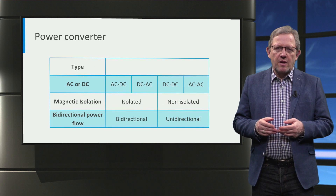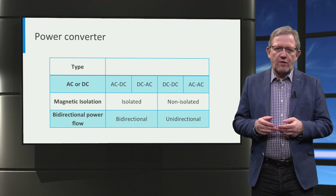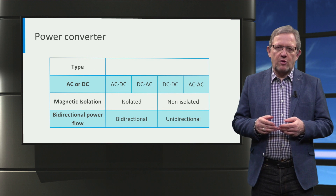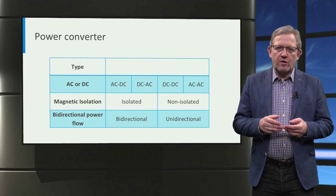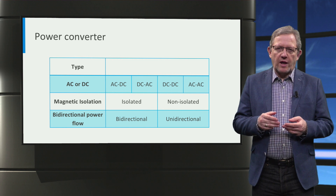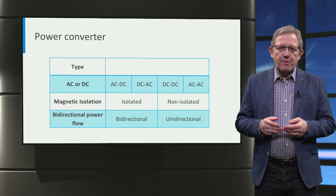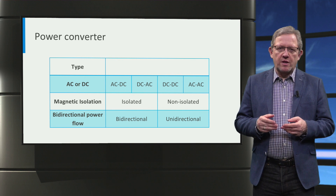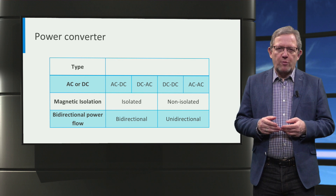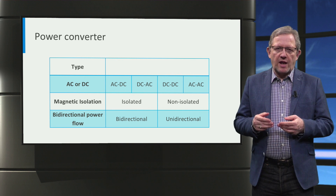This table gives an overview of the three simple ways to classify power converters based on AC or DC power, power flow direction, and presence of isolation. Different types of power converters can be developed that meet a combination of these characteristics.